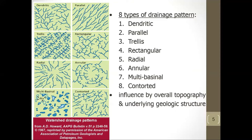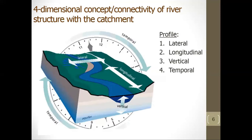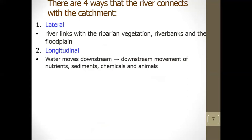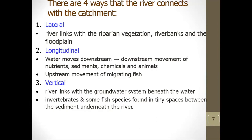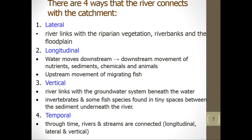There are four dimensional concepts or connectivity of river structure with the catchment: lateral, longitudinal, vertical, and temporal. In the lateral dimension, the river links with the riparian vegetation, riverbanks, and floodplain. In the longitudinal dimension, water moves downstream, carrying nutrients, sediment, chemicals, and animals, while fish migrate upstream. In the vertical dimension, the river connects with the groundwater system beneath, where invertebrates and some fish species are found in tiny spaces between sediment underneath the river.